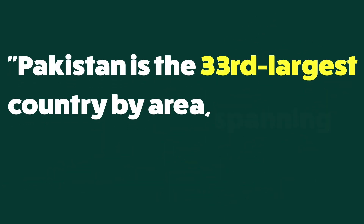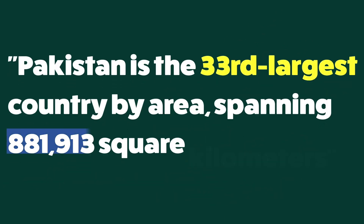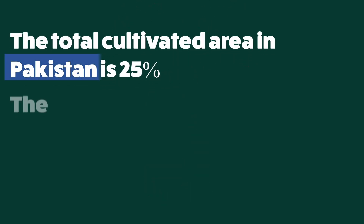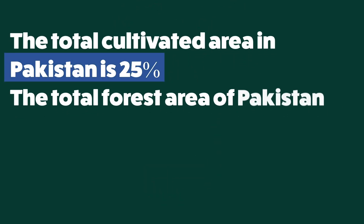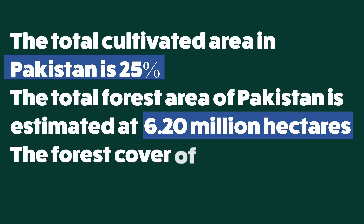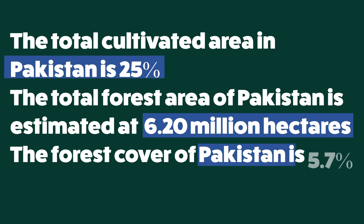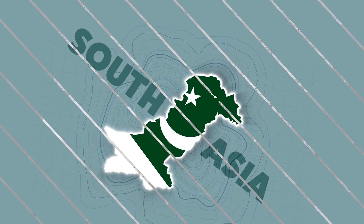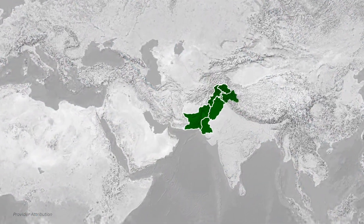Pakistan is the 33rd largest country by area, which we will discuss in the next part. The total cultivated area is 25 percent, its forest area is 6.2 million hectares, and its forest cover is 5.7 percent.